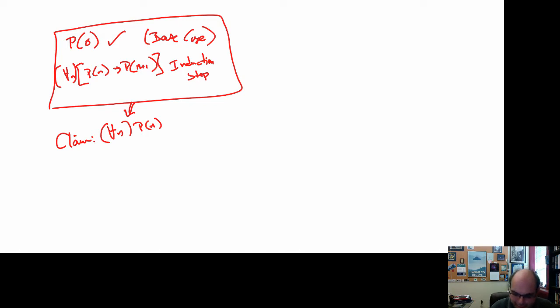Now how can I justify that? Let's think of a particular P of n. I'm going to pick P of 10. Why do I think that P of 10 is true? And the reason is that P of 9 implies P of 10. And I know that from the induction step, because for all n, P of n implies P of n plus 1.